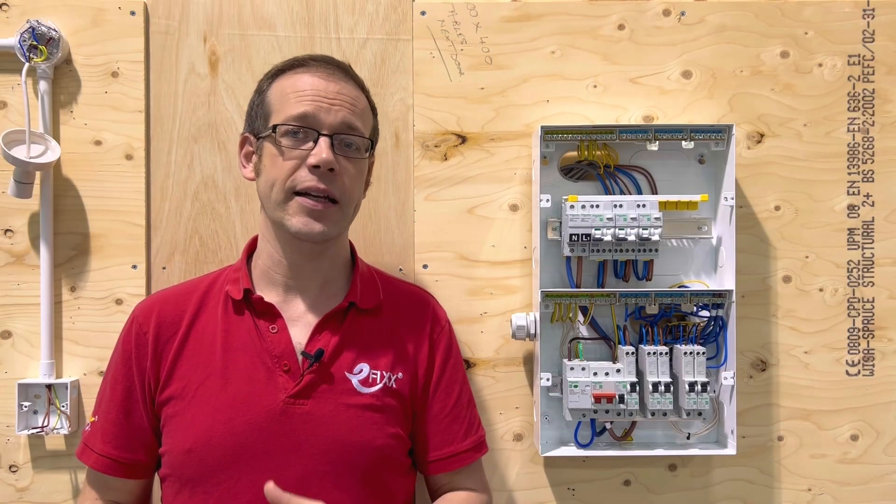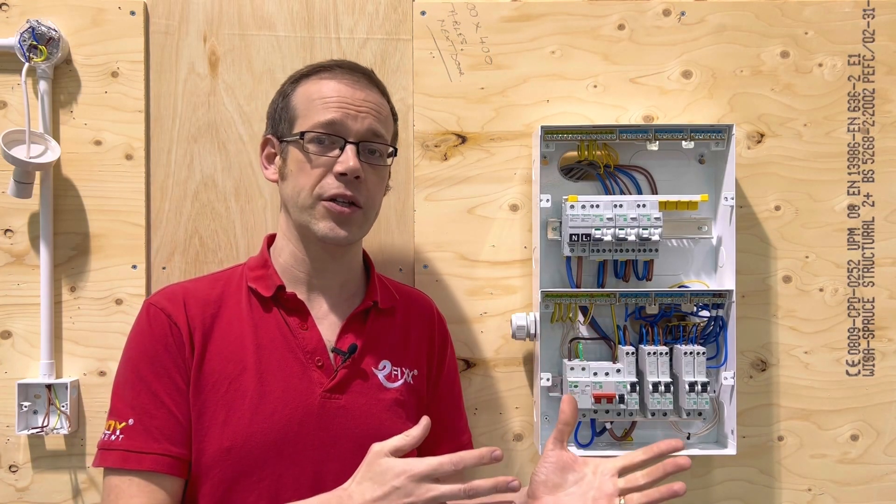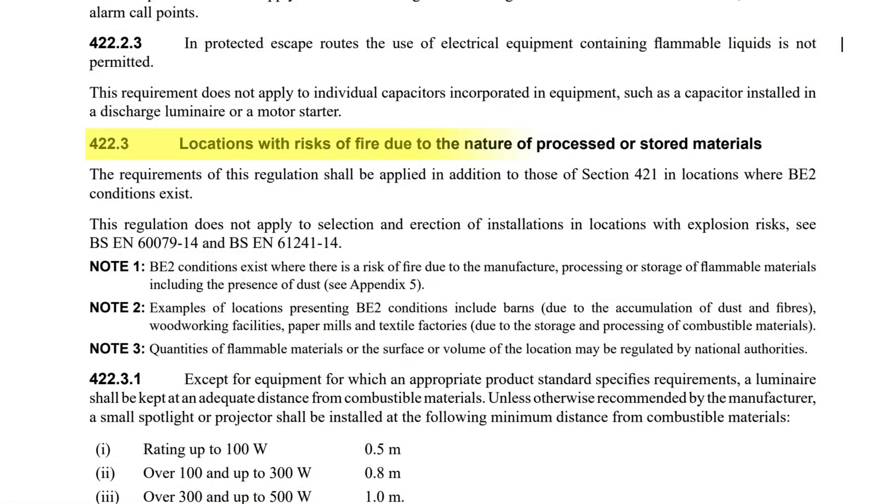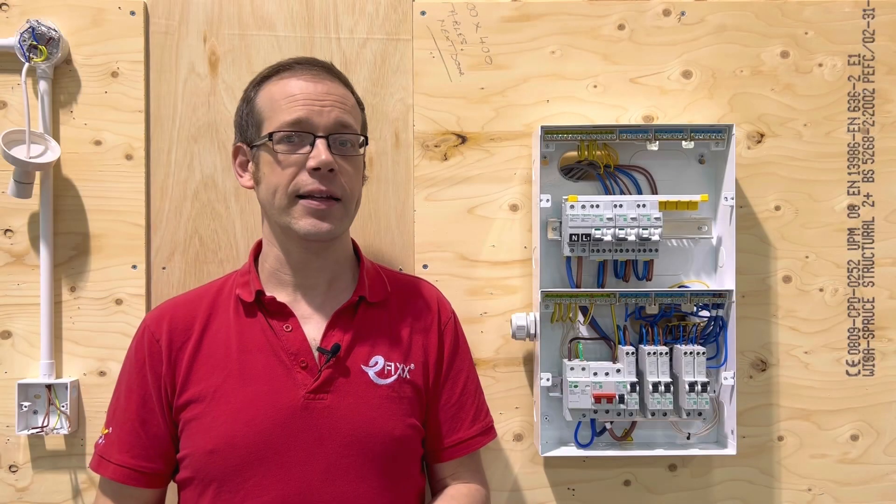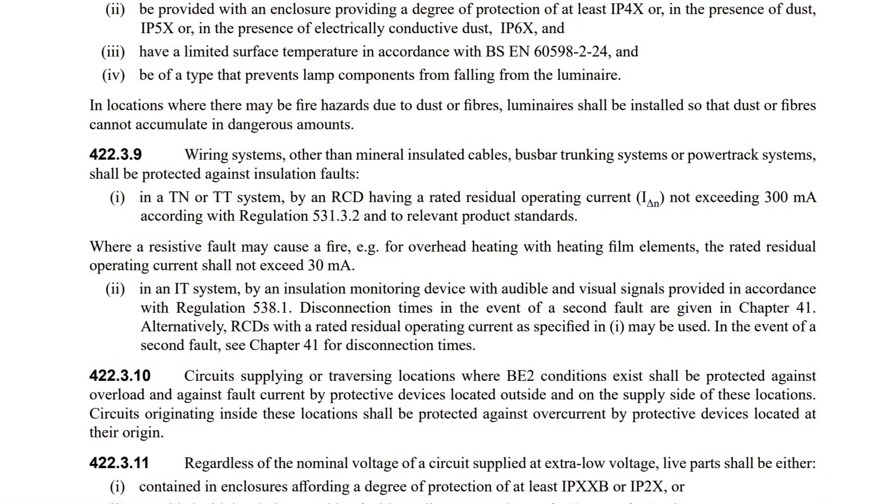Other places that specifically require RCD protection for reasons other than additional or fault protection relate to section 422.3 which is concerned with locations with risks of fire due to the nature of processed or stored materials. According to note one there this may include barns due to the accumulation of dust and fibers, woodworking facilities, paper mills and textile factories due to the storage and processing of combustible materials. In areas like these and similar regulation 422.3.9 states that in these locations wiring systems other than mineral insulated cables, bus bar trunking systems or power track systems shall be protected against insulation faults in a TN or TT system by an RCD having a rated residual operating current not exceeding 300 milliamps according with regulation 531.3.2 and to relevant product standards.